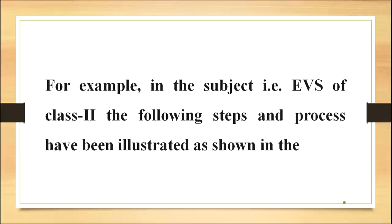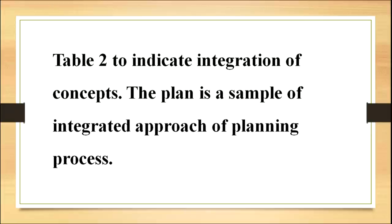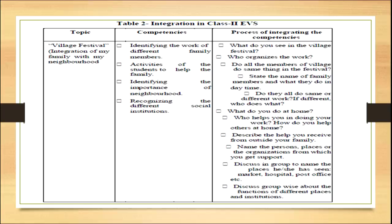For example, in the subject EVS of class 2 the following steps and process have been illustrated as shown in table 2 to indicate integration of the concepts. The plan is a sample of an integrated approach of the planning process. The topic being discussed is 'village festival' — the integration of family with my neighborhood. Competencies required are: identifying the work of different family members, activities of the students to help the family, identifying the importance of neighborhood, and recognizing the different social institutions.